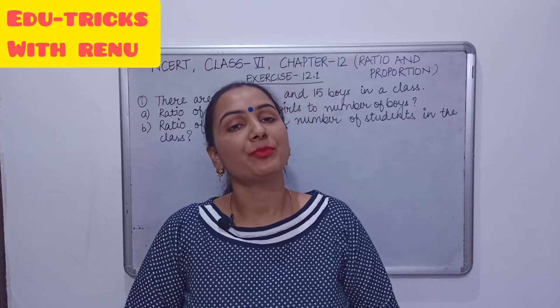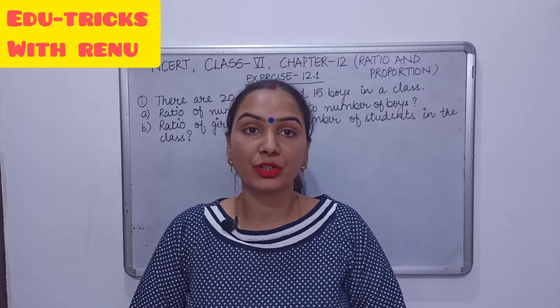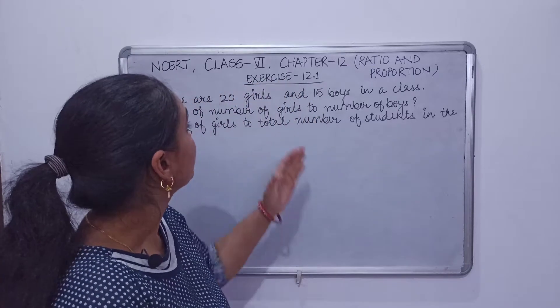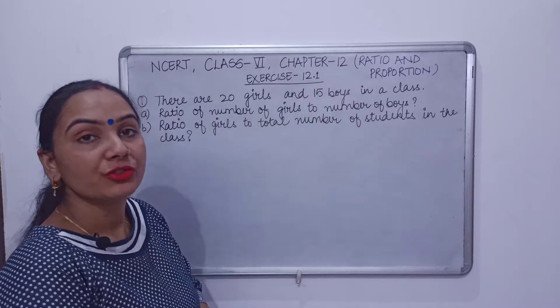Hello friends, welcome back. So today we are going to do exercise number 12.1 of chapter ratio and proportion, which is chapter number 12 of NCERT book of class 6.